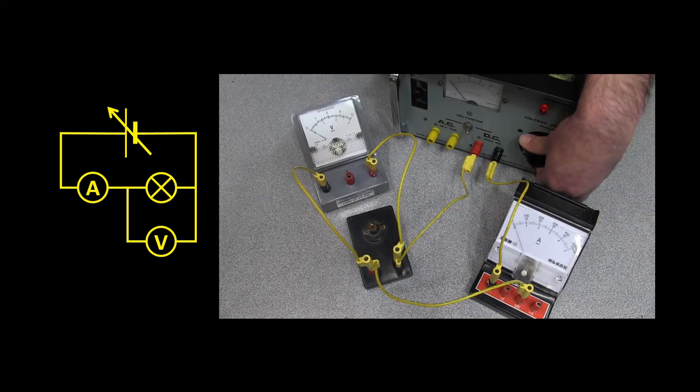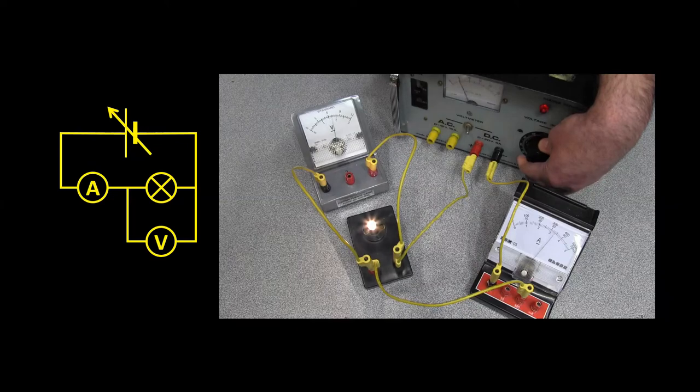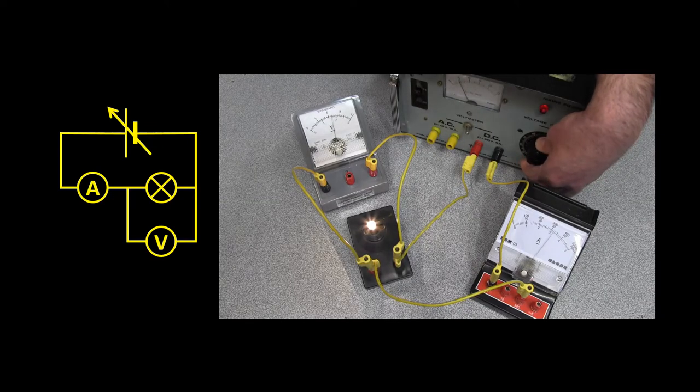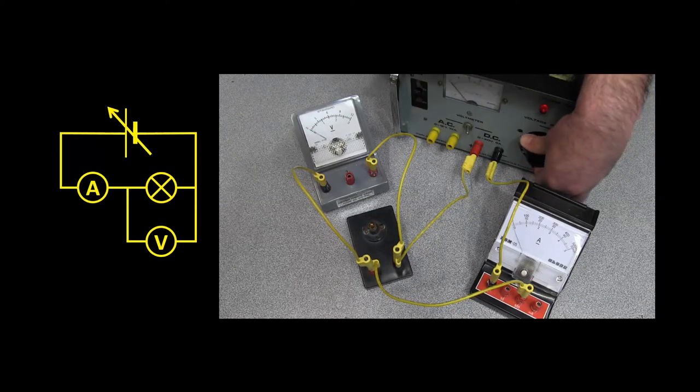We can see that as I increase the voltage across the light globe, the current in the light globe also increases and it gets brighter. When I decrease the voltage, the current decreases.